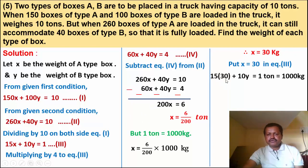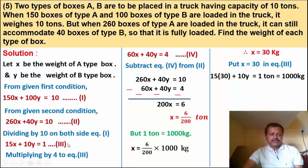15 into 30 plus 10y equals 1 (which is 1000 kg). So 450 plus 10y equals 1000.